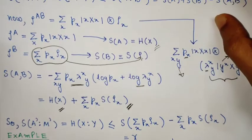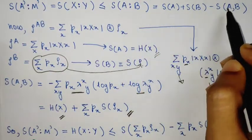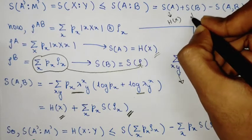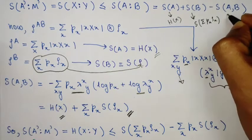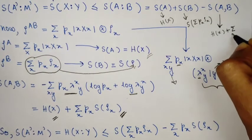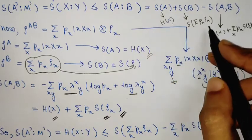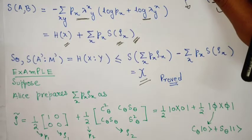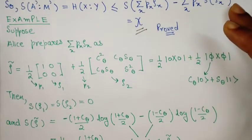The mutual information between A and B is S(A) + S(B) - S(AB). We have calculated all these: S(A) = H(x), S(B) = S(sum_x p(x) rho_x), and S(AB) = H(x) + sum_x p(x) S(rho_x). Subtracting these gives exactly the Holevo chi quantity. We have finally proven the Holevo bound.